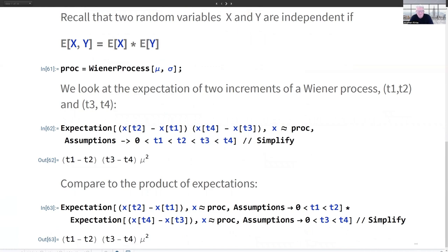So the expectation of X and Y is the expectation of X times the expectation of Y. And that means that the increments in a Wiener process, the changes from one period to the next, are independent of one another.